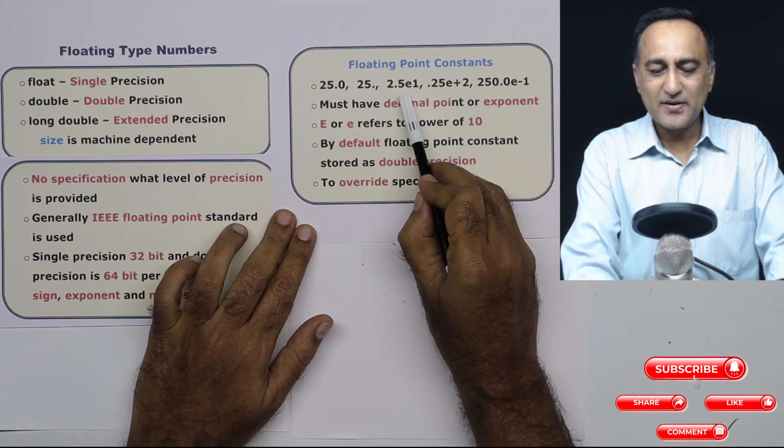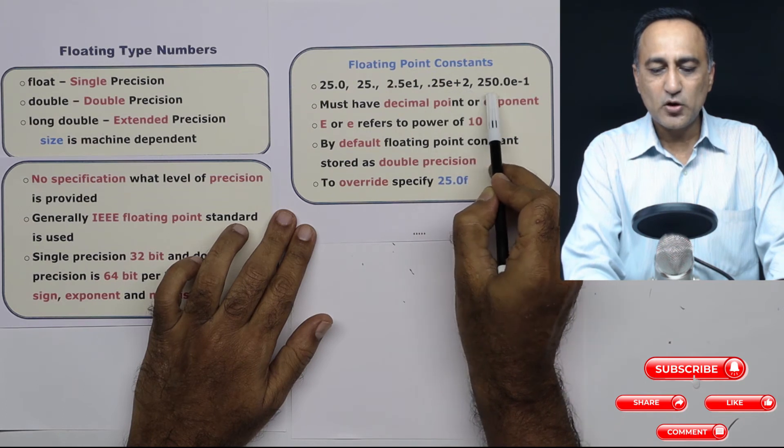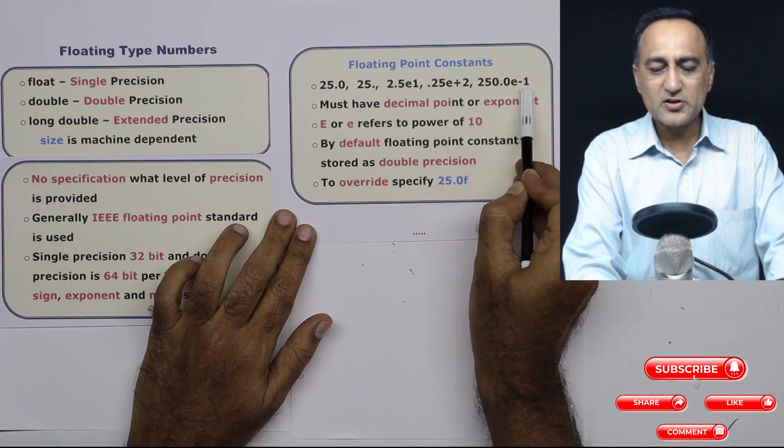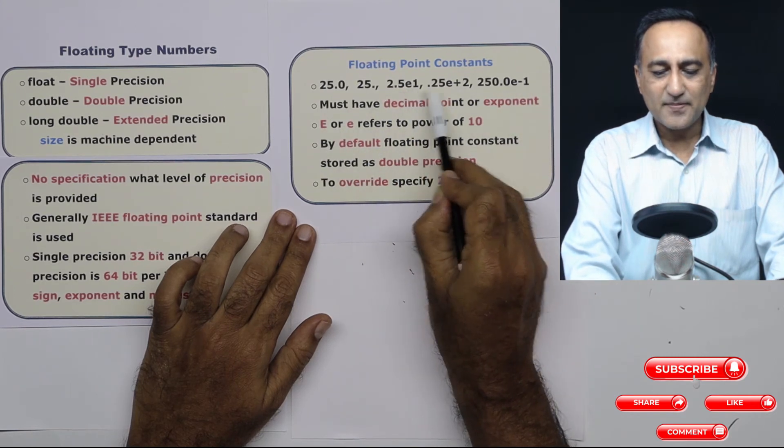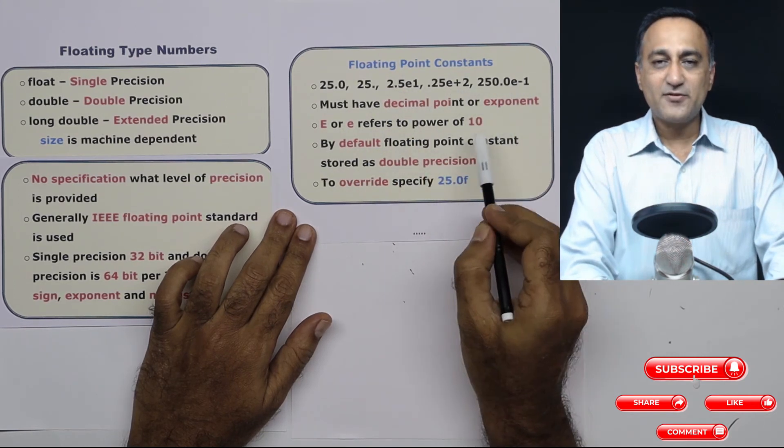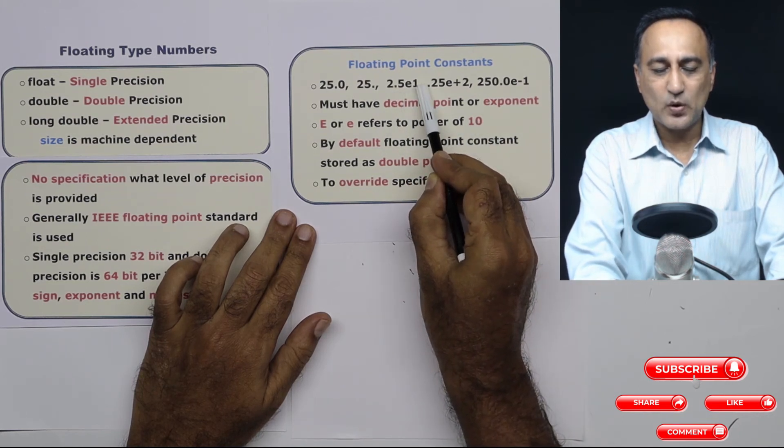So this represents 2.5 exponent raised to 1, 0.25 exponent raised to 2, 250 exponent raised to minus one. Now this E or e here, it actually refers to the power of 10. So this you can think as 2.5 times 10 raised to the power of one.